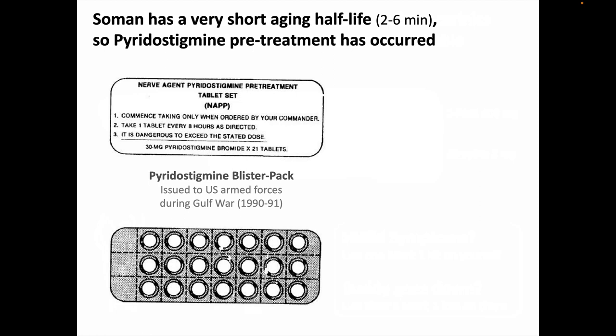For oximes to work — to kick the nerve agent out of acetylcholinesterase's active site and regenerate the enzyme — this has to happen before aging has occurred. For most organophosphate insecticides and most nerve agents, the aging process has a half-life of several hours, so there's some time after initial exposure to get the victim to more definitive medical care. However, Soman, nerve agent GD, has a very short aging half-life of about two to six minutes, and in a mass casualty situation, it's likely that by the time a victim reaches definitive care, all of their acetylcholinesterase enzyme will be irreversibly inactivated. They're likely to need lots of ongoing care, probably on a ventilator, which would not be feasible with mass casualties in a wartime setting.